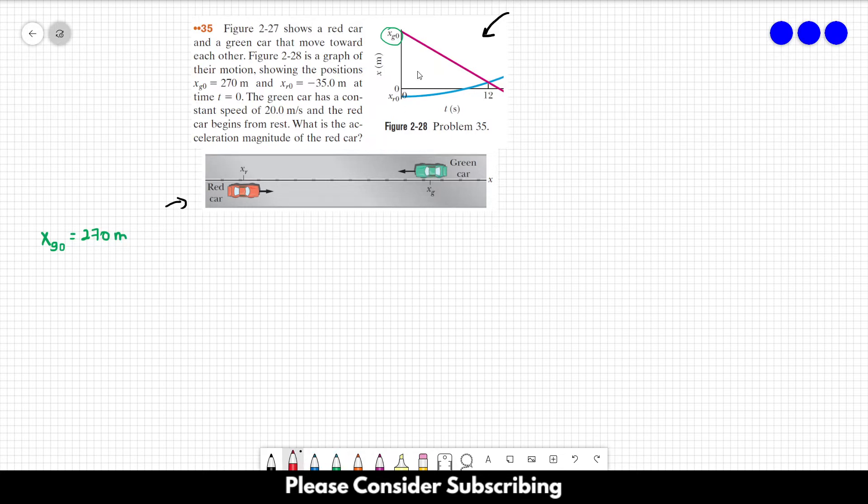And this value over here is XR0, which is minus 35 meters at T equals 0.